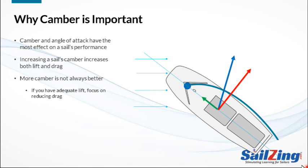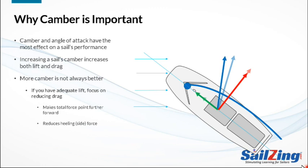Let's compare this to the total force from the flat sail. The flat sail's total force was smaller, but it pointed more forward. If we break this into two parts, we see that the forward force is greater and the side force is less for the flatter sail. So reducing drag gives you more forward force and less side force — more speed with less hiking. In very light air, if a sail is too full, the air can't follow the shape of the leeward side and separates, stalling the sail. Also, a flatter sail inherently points better than a fuller sail.